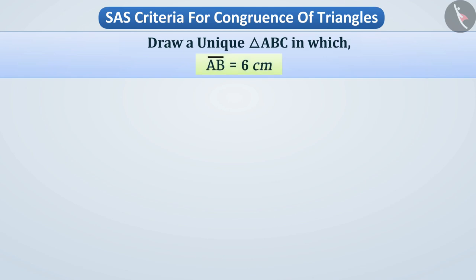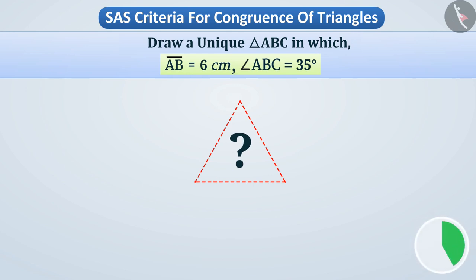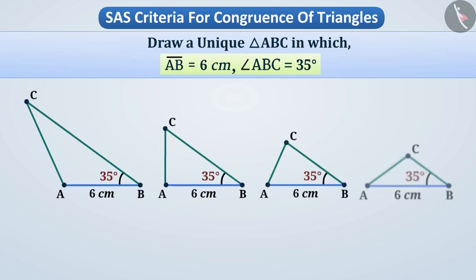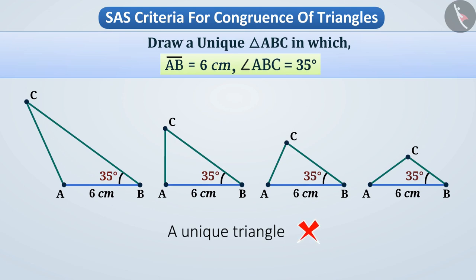Suppose AB is equal to 6 cm and angle ABC is equal to 35 degrees. Now can we draw a unique triangle ABC? Based on the measurements given, we can draw different types of triangle ABC. In this situation also, we cannot get a unique triangle ABC, because point C doesn't have a fixed place, so proper information is not given.